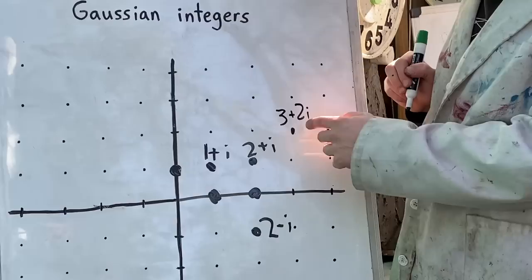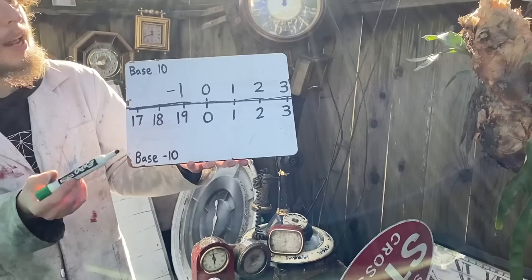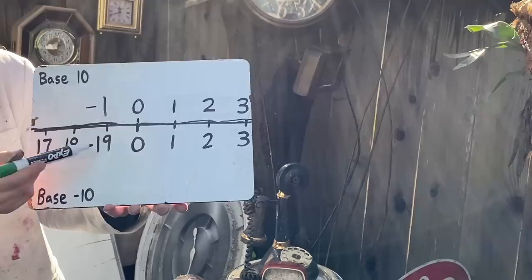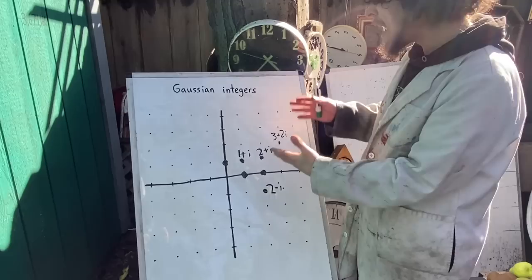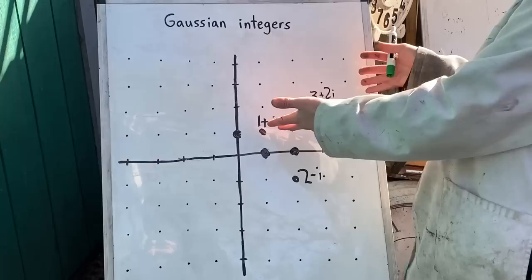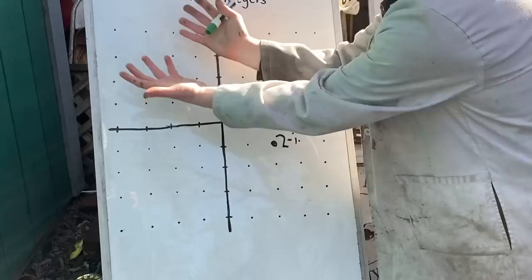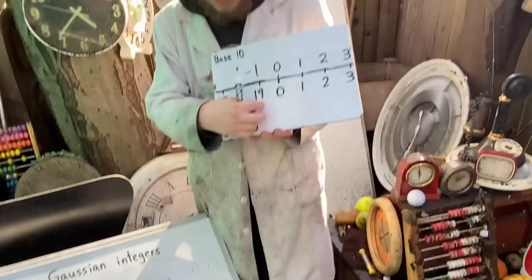But if base negative 10 was able to get away with conveying negative integers with a little string of digits that didn't require a minus sign, could we have some base that could convey all these Gaussian integers without needing to separate the components, without needing to use a letter like i, or without needing to use minus signs in possibly multiple places? Could we somehow find a base that could just use a little string of digits with no extra symbols and convey this whole number plane?